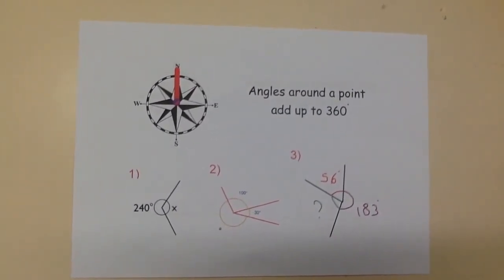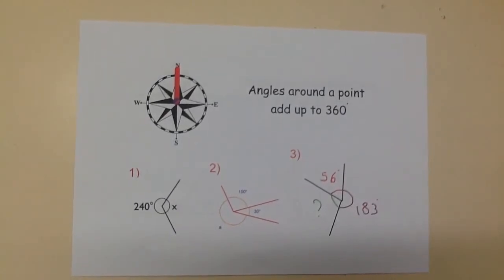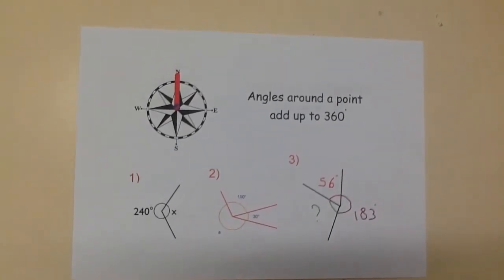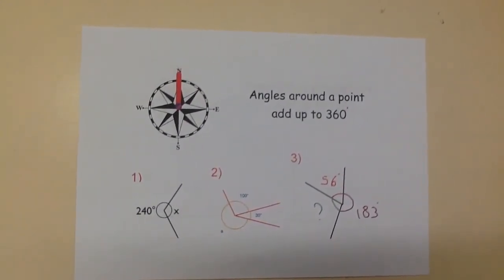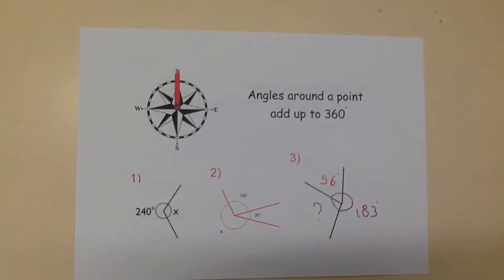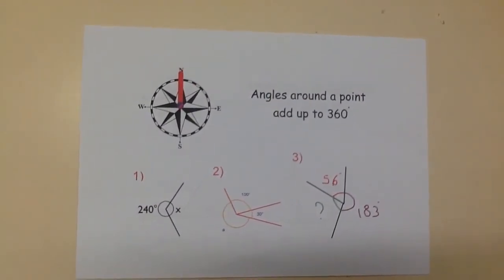So here we know part of this circle is measuring 240 degrees. To work out the remaining angle, we subtract 240 degrees from 360 degrees, which we know is the total. So our answer would be 120 degrees.